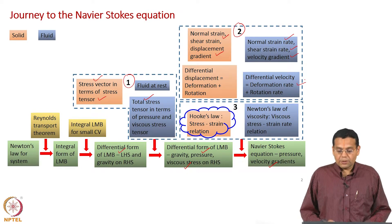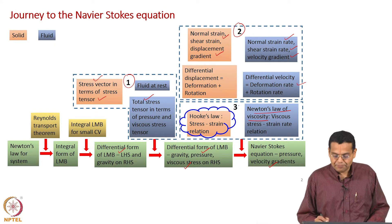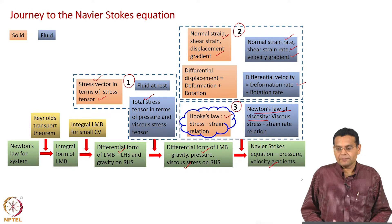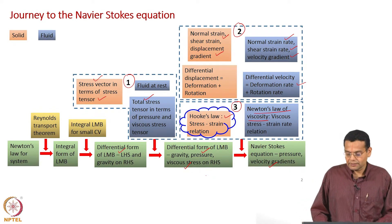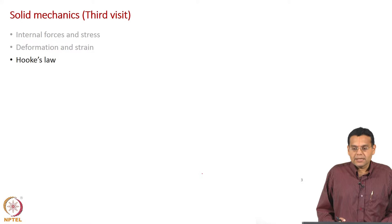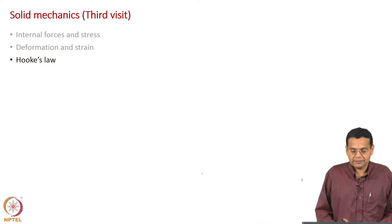Now we need to look at the actual relationship between viscous stress and velocity gradients, which is Newton's law of viscosity. But before that, we take a third visit to solid mechanics to discuss Hooke's law — the relationship between stress and strain. Once you understand that, the analogous relationship in fluids is stress and strain rate. In terms of titles: first visit covered internal forces and stress, second visit covered deformation and strain, and this third visit covers Hooke's law.